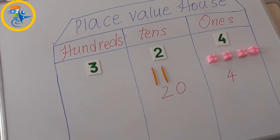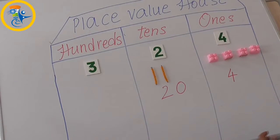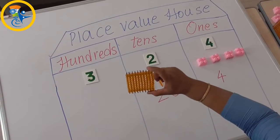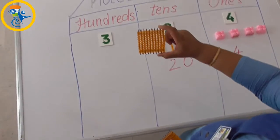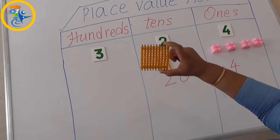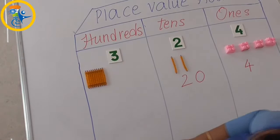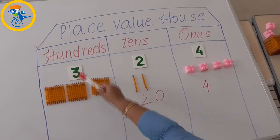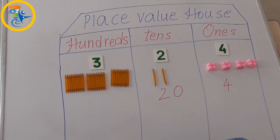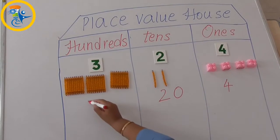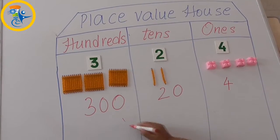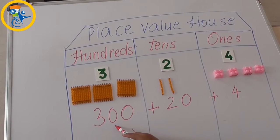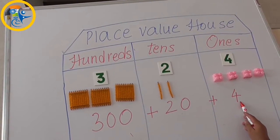Now let us understand the value of 3 at hundreds. 3 at hundreds is 300. This is a 100 grid — it has 10 rows of 10. I am going to place: 1, 2, and 3. So the value of 3 at hundreds is 100, 200, and 300. So the expanded form is 300 plus 20 plus 4.